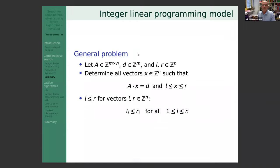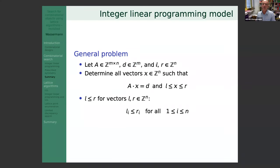The general integer linear programming model: we have an integer matrix A, an integer right-hand side vector d (with possibly negative entries), and integer bounds l and r. We want to solve A·x = d such that x is an integer vector with l ≤ x ≤ r componentwise.